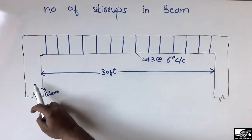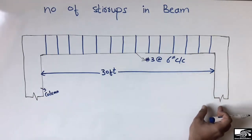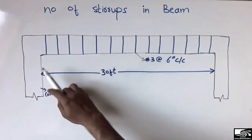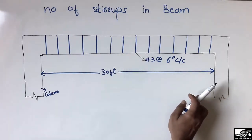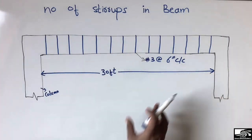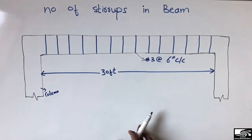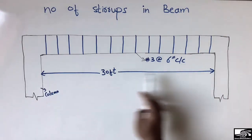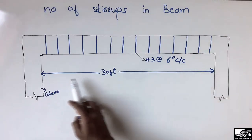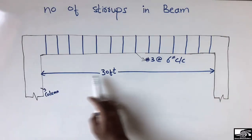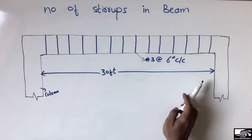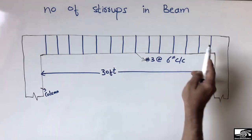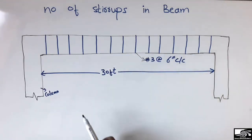Let's consider this beam is in a frame. You can see here the two columns at the two ends, while the beam is supported by these two columns, so it's like a simply supported beam. The length of the beam is 30 feet, and the stirrups are used throughout the length of the beam.